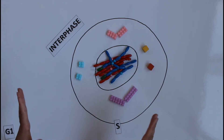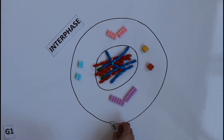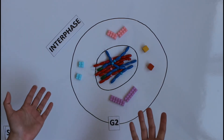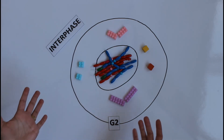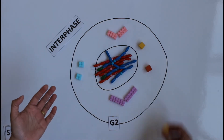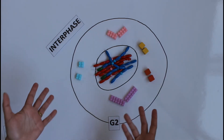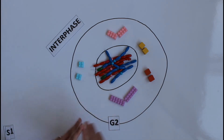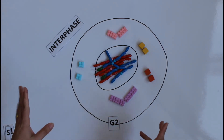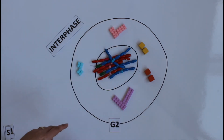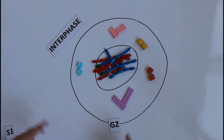After S comes G2. In G2, all the substances the cell needs for division are multiplied — for example, enzymes. I multiply all the necessary substances. That's it for interphase: G1 duplicates the organelles, S duplicates the DNA, and G2 duplicates other substances such as enzymes. Now the cell is prepared for division.